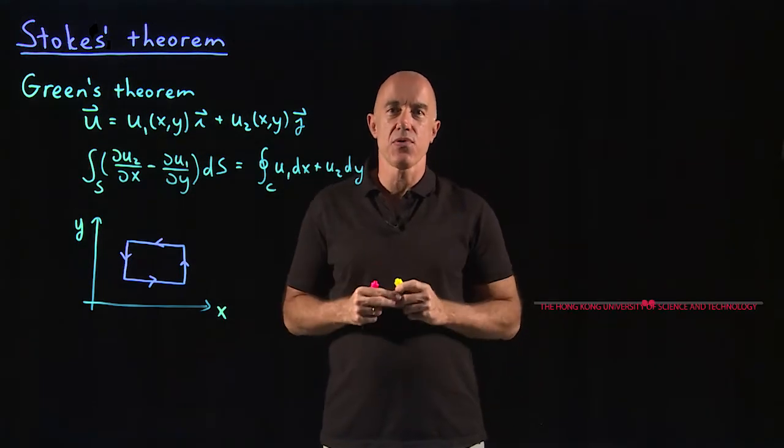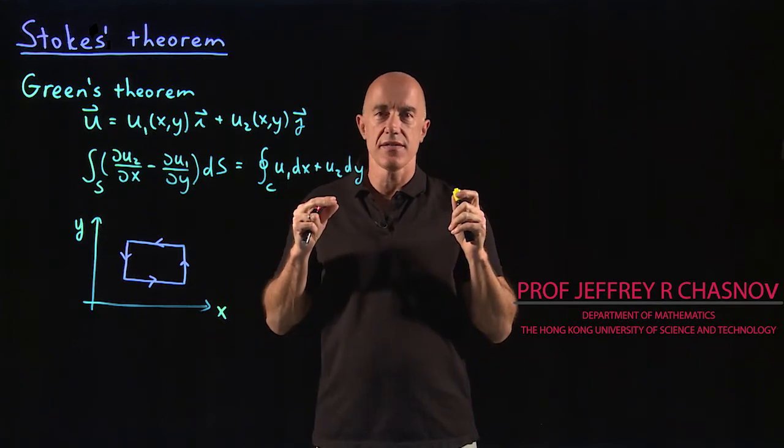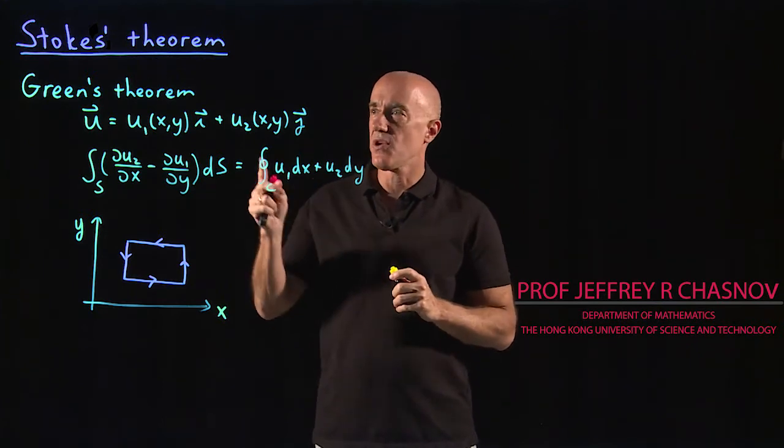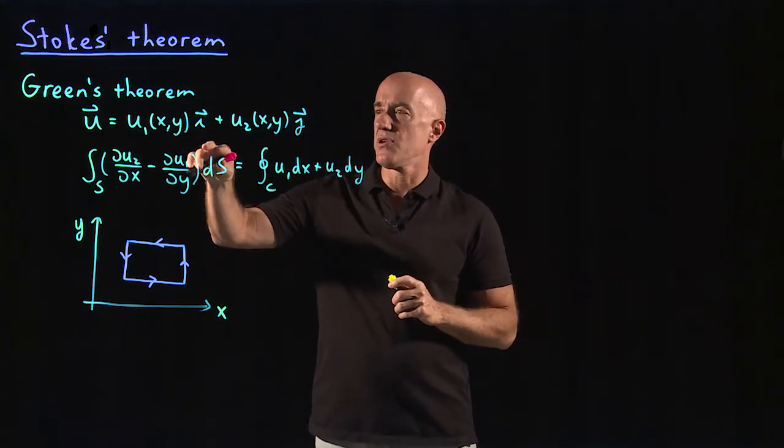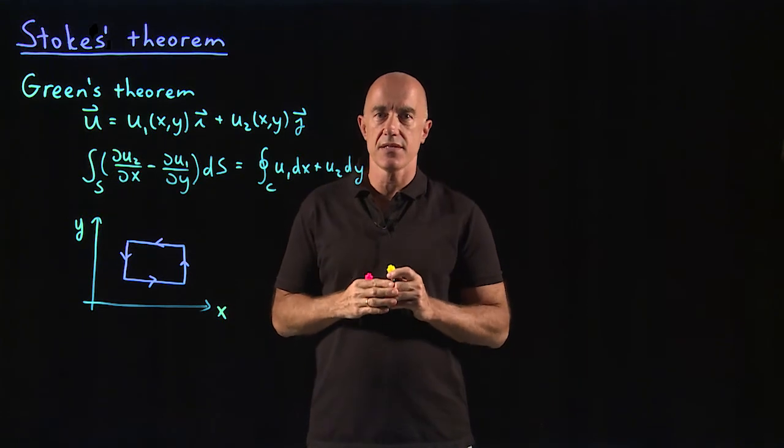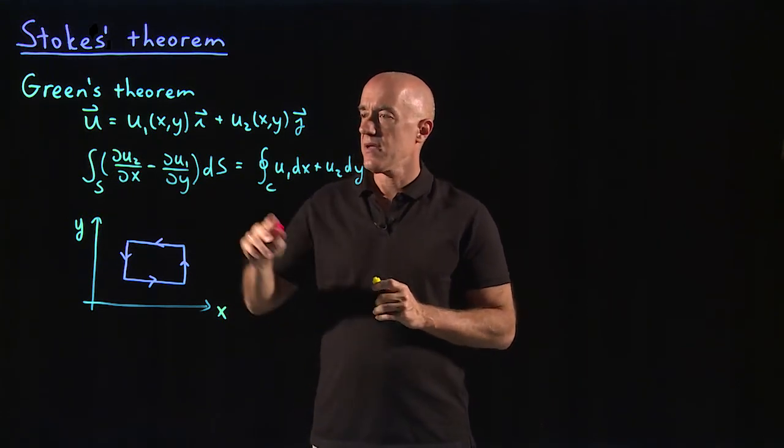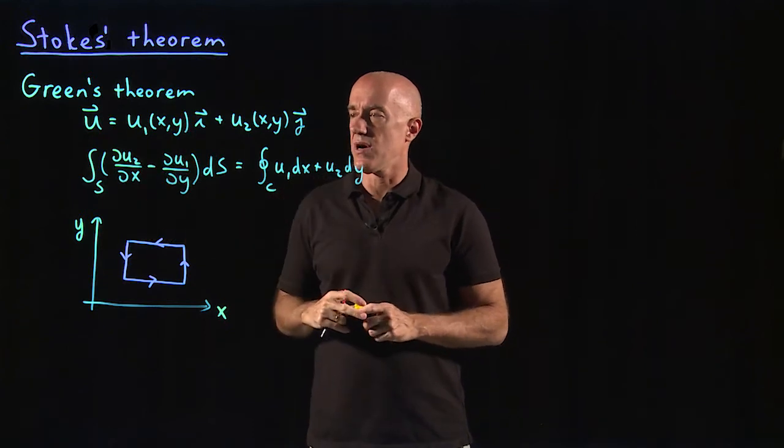The two most important theorems of vector calculus are the divergence theorem and Stokes' theorem. Stokes' theorem is the three-dimensional generalization of Green's theorem, which I discussed in the last video. So how do we generalize Green's theorem to three dimensions?